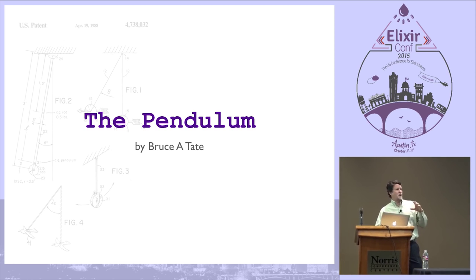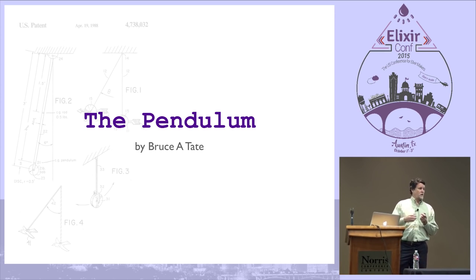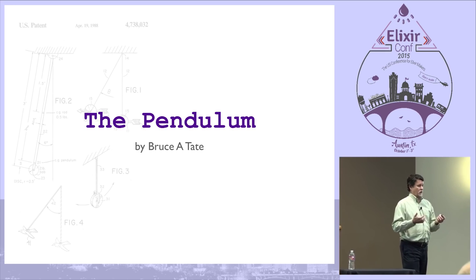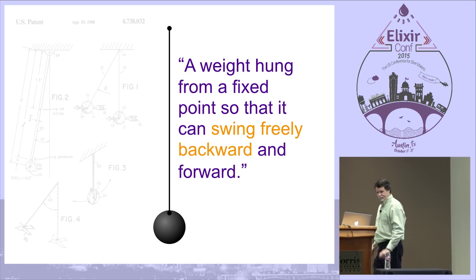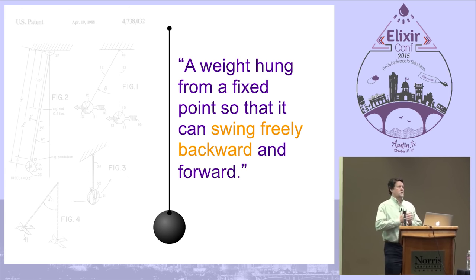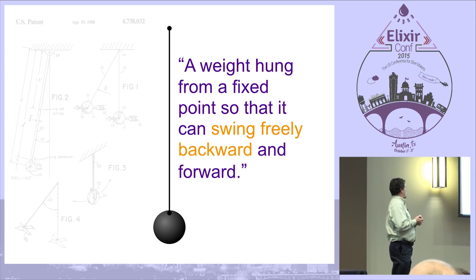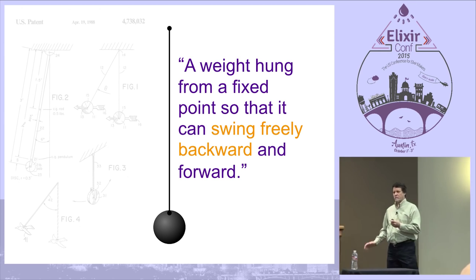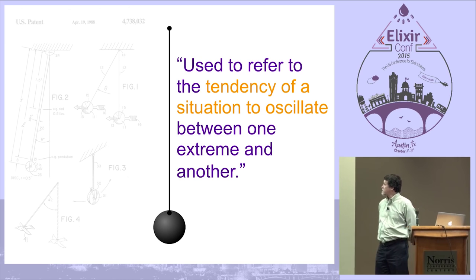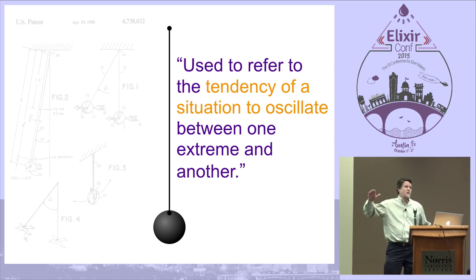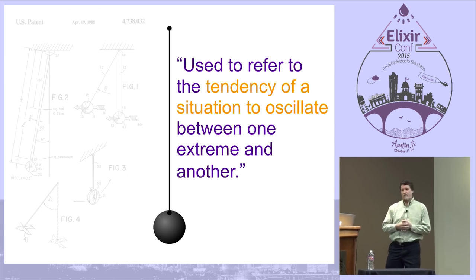It never really congealed until this year, when Jose and I were talking over the Programming Phoenix book. We were talking about a modified MVC and I said, wait a minute, we've seen this before. This talk is about a pendulum — there's a literal definition: a weight swinging back and forth in a fixed period. But there's also a figurative definition: the tendency to oscillate back and forth, not every couple of seconds, but every 10 or 15 years or so.